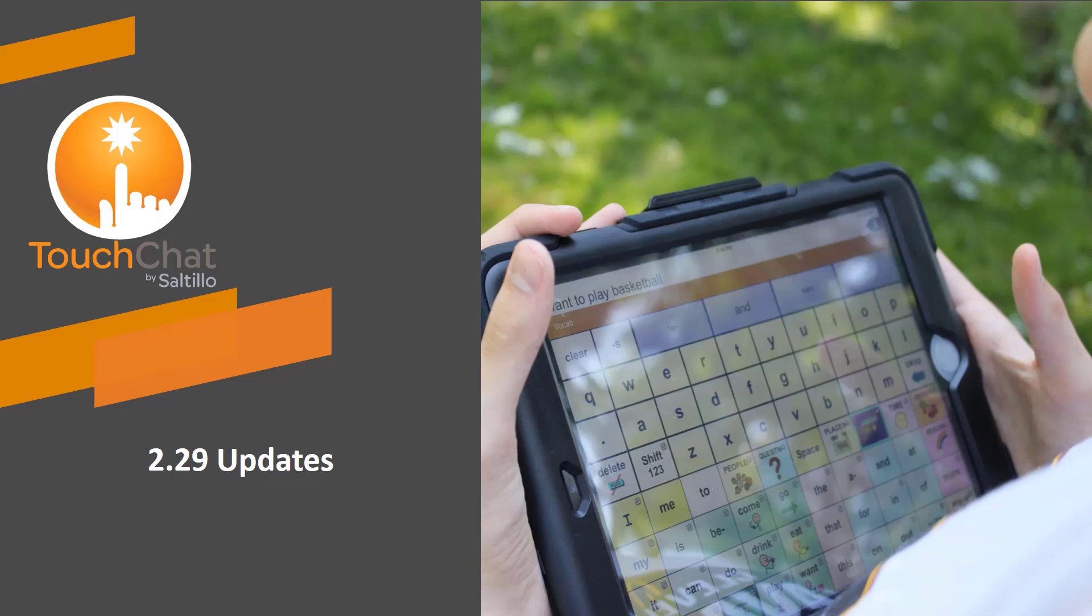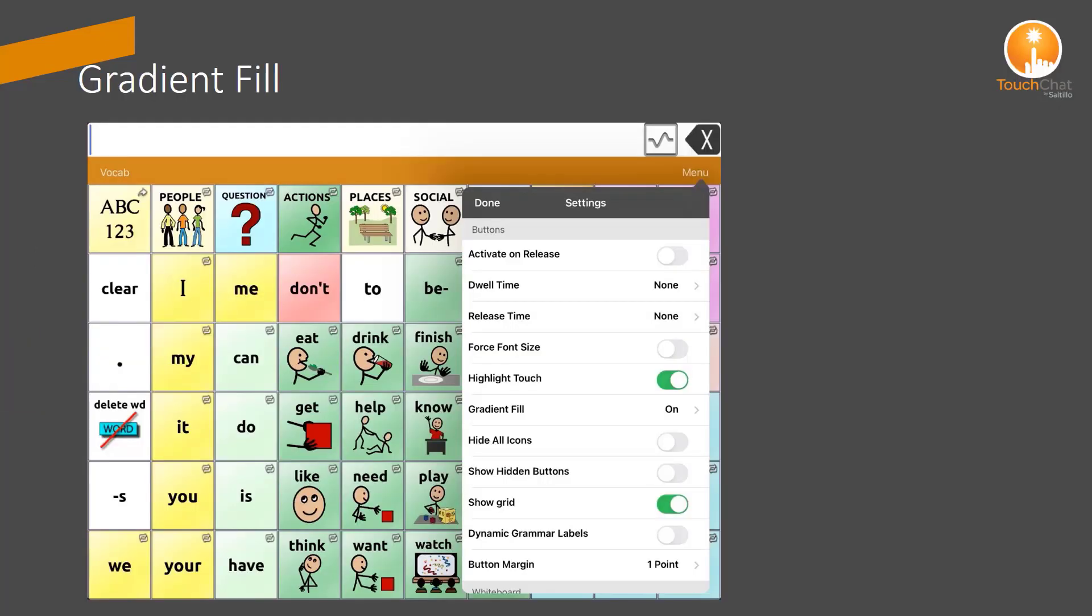TouchChat offers a few new features with Update 2.29. A new setting allows you to adjust the way the button looks. The Gradient Fill is found in the Settings menu under the Buttons category.